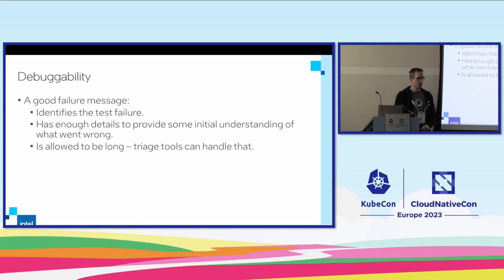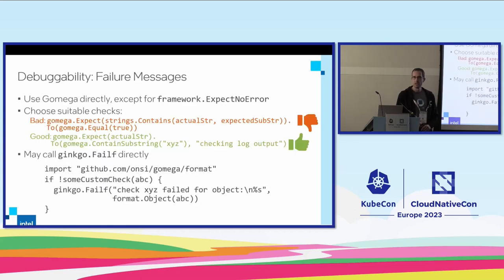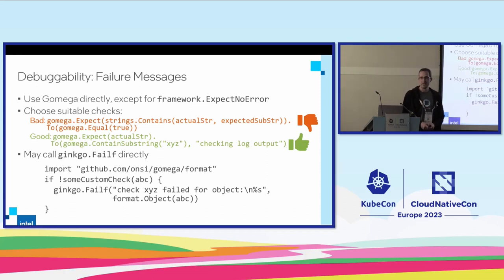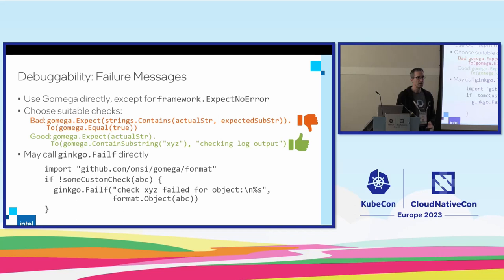How do we generate those failure messages? Ultimately a test should pass and never fail. But if it fails, these failure messages make the difference between a good test and a bad test. A bad test gives you no useful information — you'd have to download the binary, download the test suite, modify it, add debug output. And all of that doesn't work if a failure occurs only occasionally in your CI.